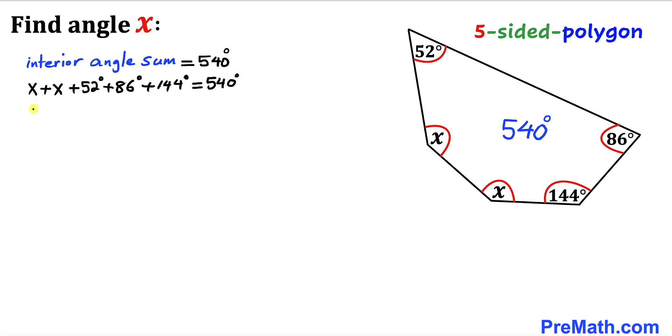Let's combine the like terms. We're going to get 2x plus 282 degrees equals 540 degrees.